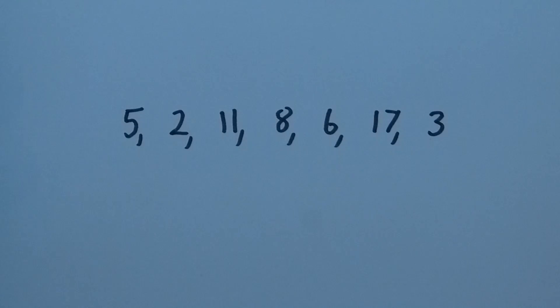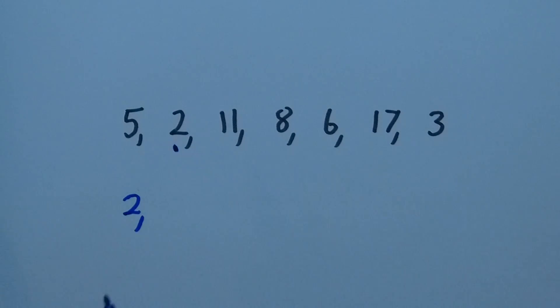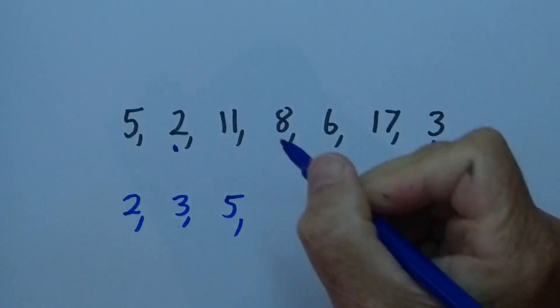We can do it with a pen and paper. Find the smallest, put it on our list, and mark it. Then repeat. But leave a little space in case we miss one. Continue on.